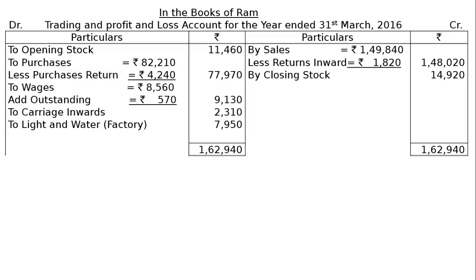Take the credit total to the debit total and find the gross profit carried down. Gross profit c/d is rupees 54,120. In the profit and loss account, we will have by gross profit brought down rupees 54,120.